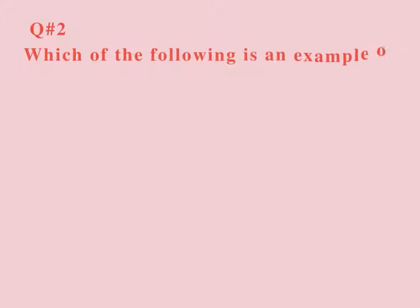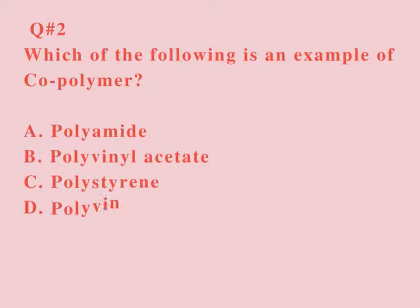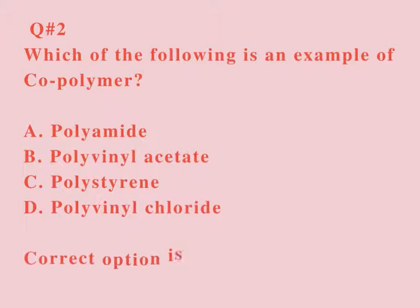Question number 2. Which of the following is an example of a copolymer? A. Polyamide. B. Polyvinyl acetate. C. Polystyrene. D. Polyvinyl chloride. Correct option is A.